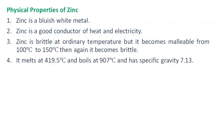Physical properties of zinc. Zinc is a bluish-white metal and a good conductor of heat and electricity. Zinc is brittle at ordinary temperature but becomes malleable from 100 degrees Celsius to 150 degrees Celsius, then again becomes brittle. It melts at 419.5 degrees Celsius, boils at 907 degrees Celsius, and has a specific gravity of 7.13.